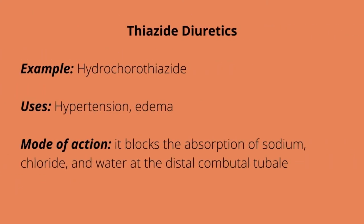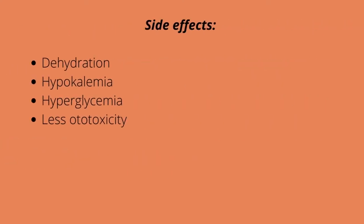Our last diuretic will be our thiazide diuretic. An example is hydrochlorothiazide. It's commonly used with other hypertensive medications. Treatment includes hypertension and edema related to heart, kidney, or liver disease. The mode of action: it blocks the absorption of sodium, chloride, and water at the distal convoluted tubule. Side effects include dehydration — dehydration is common with diuretics — hypokalemia, hyperglycemia. Like our loop diuretics, we monitor for blood sugars. It's less of a risk for ototoxicity compared to loop diuretics.